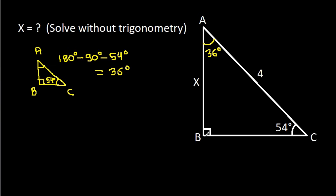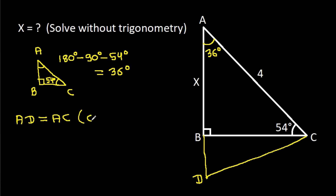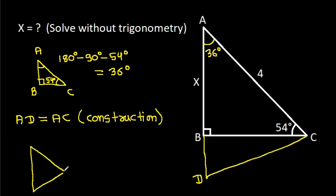If we extend AB to suppose D and join CD, such that AD is equal to AC — this is our construction. Then in triangle ADC, we have AD is equal to AC, and AC is 4, so AD will be 4.